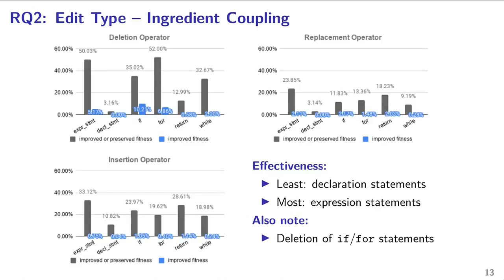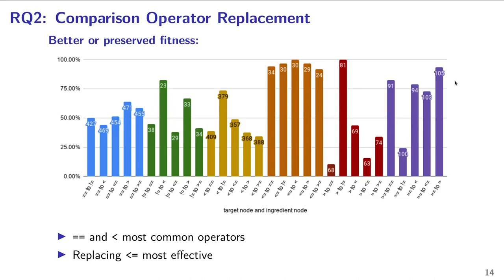Finally, we look at the coupling between edit types and ingredient types. Three graphs show, for deletion, replacement, and insertion operators, the performance relative to the type of statement they operate on. Gray bars represent cases where fitness is not worsened, and blue bars show cases where the edit is useful at passing more test cases. For all three operators, the least useful ingredient type is the declaration statement, and the most useful is the expression statement. For deletion, targeting if conditions and while loops was very efficient, though none of these edits made it to the final patches. For comparison operator replacements, equality and inferior operators were most present, and replacing less-or-equal with any other operator was most efficient, though overall there is no clear pattern.